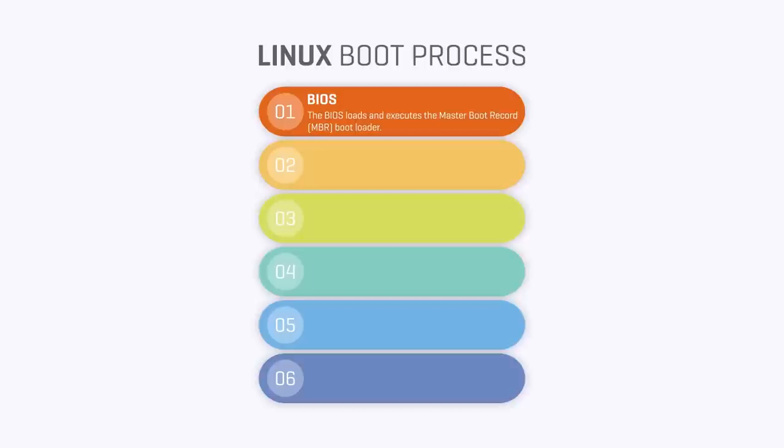On the second step, we have MBR — Master Boot Record — which is responsible for loading and executing the GRUB boot loader. MBR is present in the first sector of the bootable disk and contains information about GRUB, or LILO if we are talking about older systems.